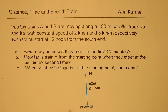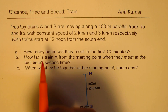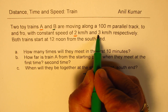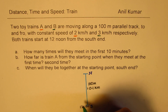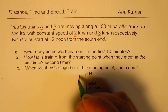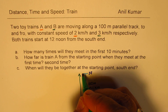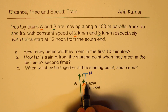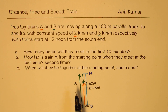Train A is moving at 2 km/h and train B is moving faster at 3 km/h. Since B is traveling faster, B will cover the whole distance and return, while A is still traveling forward — and they meet somewhere on the track. Let's call that first meeting point M1. We need to figure out when this happens.